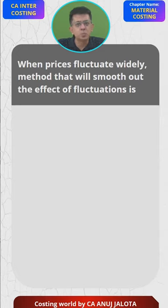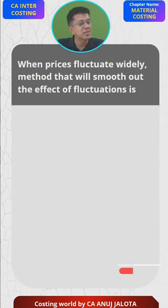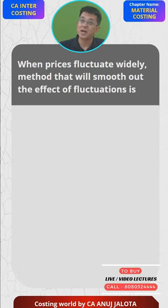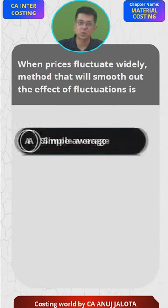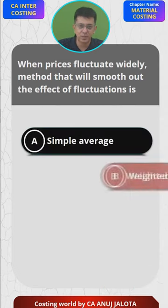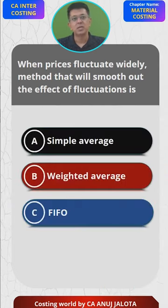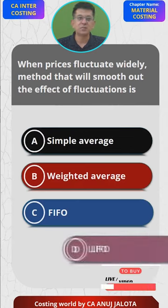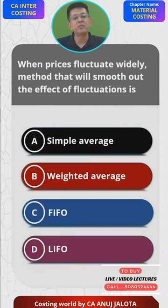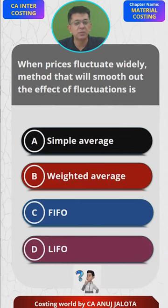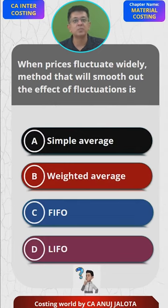...the method that will smooth out the effect of fluctuations. Now, this is exactly the reverse of our last MCQ. The four options are: A) Simple Average, B) Weighted Average, C) FIFO, and D) LIFO method. Think of the answer — it should be the reverse of the previous one.